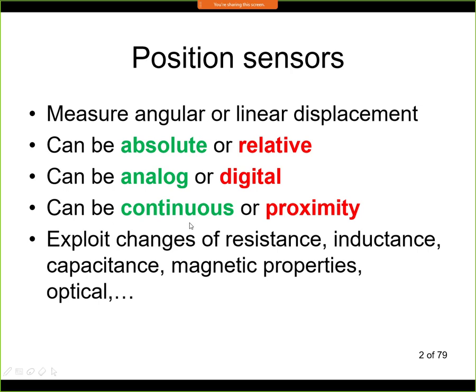The next grouping is continuous or proximity sensors. A continuous sensor gives you directly the distance between the sensor and the object. For example, on a CNC machine axis, a continuous sensor gives you a reading of 25 millimeters, then 28 millimeters. The output signal of a continuous sensor is a continuous signal — it can be current, voltage, or some digital bus — giving you the distance.